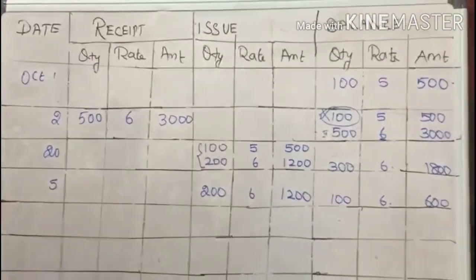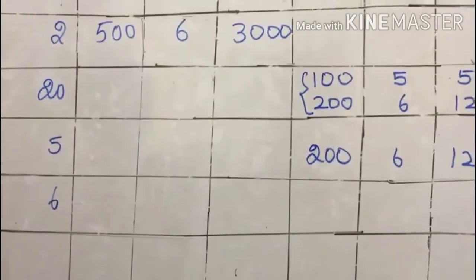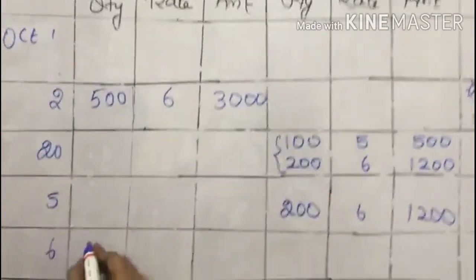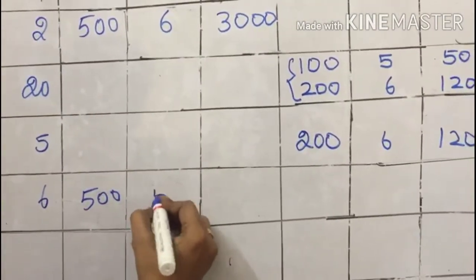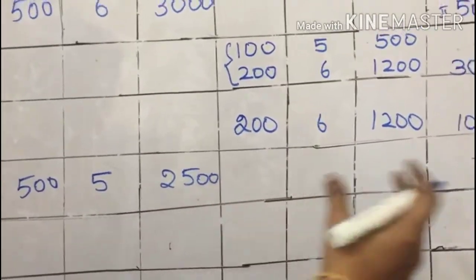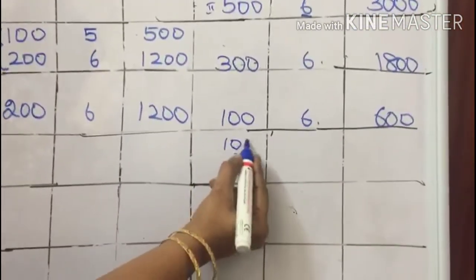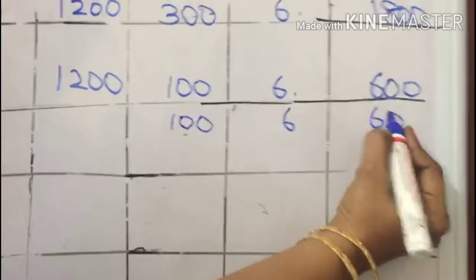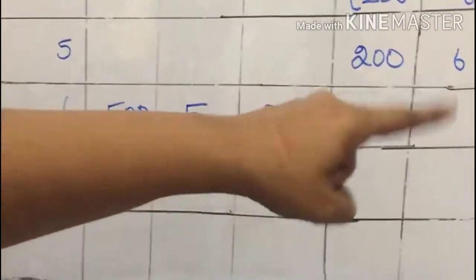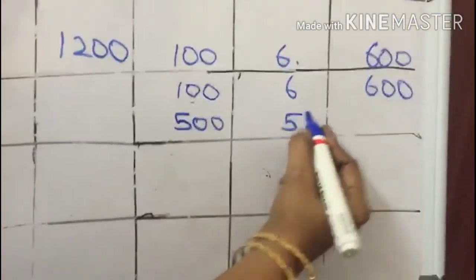On November 6, there is a receipt of 500 units at the rate of 5. So in the receipt column, I enter 500 at the rate of 5, giving 2500. In the balance column, I first write the existing 100 units at the rate of 6, giving 600. Then I record the newly received 500 at the rate of 5, giving 2500.